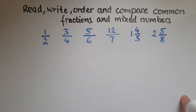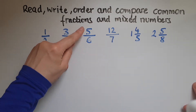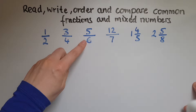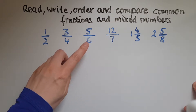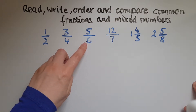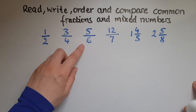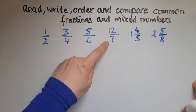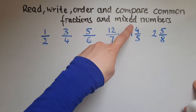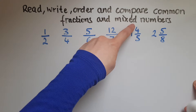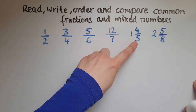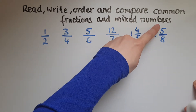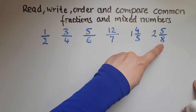Did you notice 'five sixths' — T-H-S at the end, not just 'six'? Five sixths. Twelve sevenths. One and four fifths. Two and five eighths.